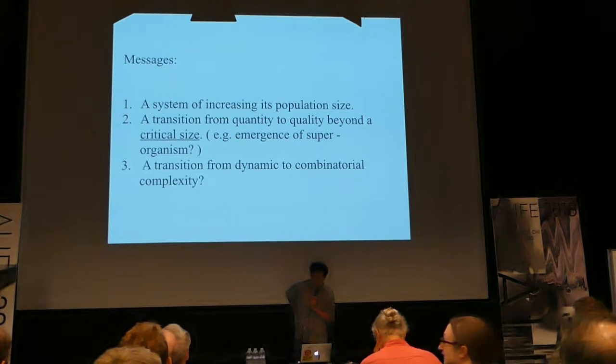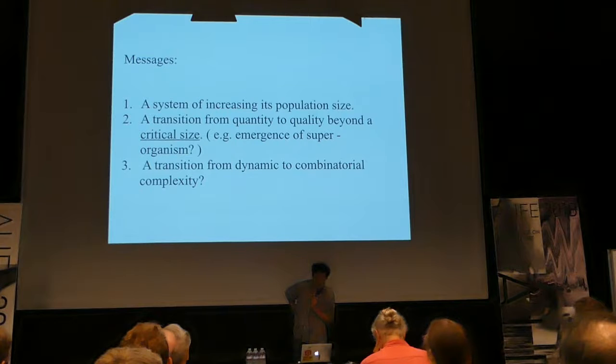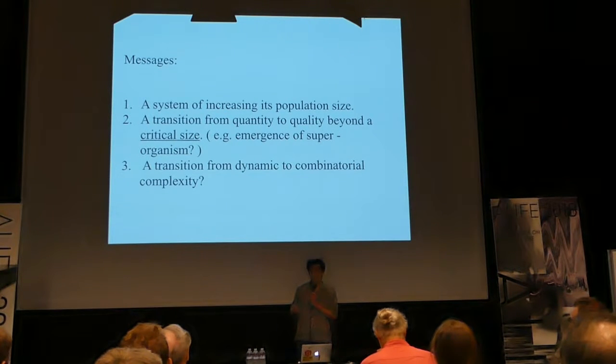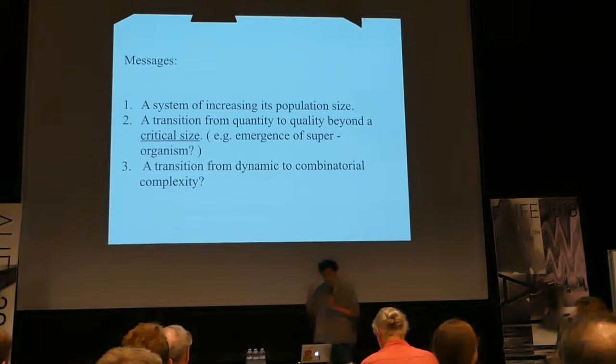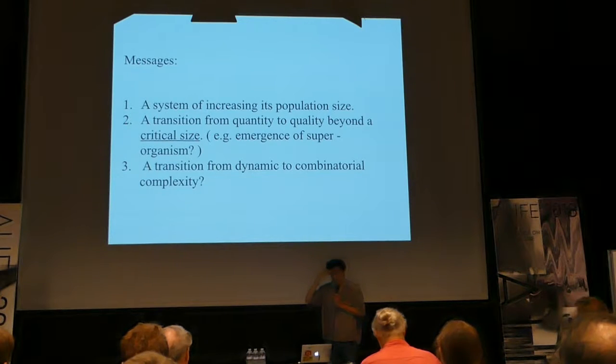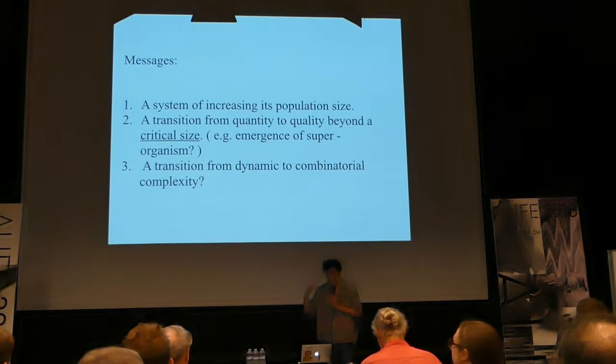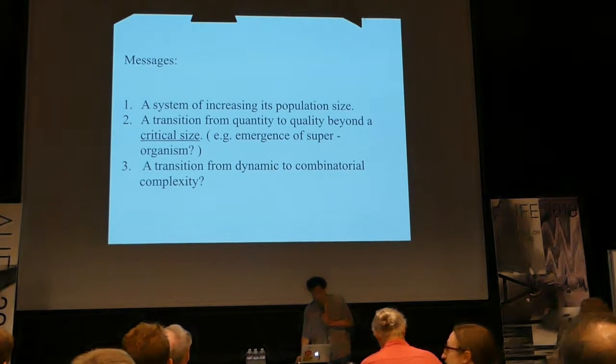The third point is a transition from dynamic to combinatorial complexity, which you can also expect by increasing the size of the population.